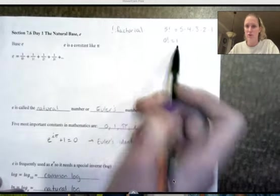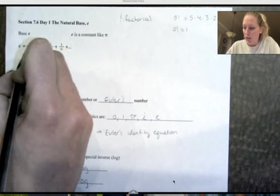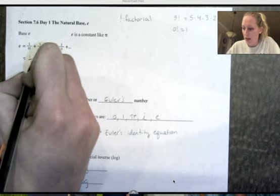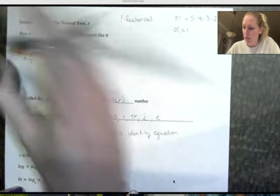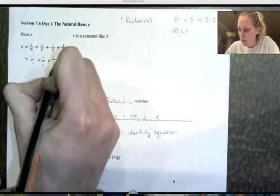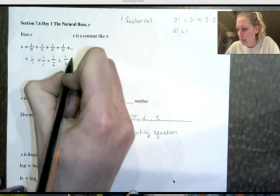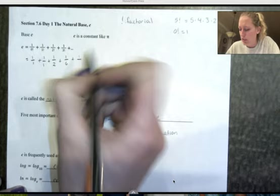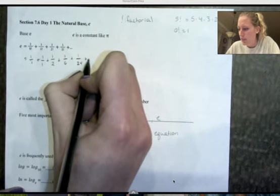So by definition, 0 factorial is 1. So if I were to do these, e equals 1 over 1, 1 factorial is also 1. This should be addition. 2 factorial is 2 times 1. 3 factorial is 3 times 2 times 1, which is 6. 4 factorial is 4 times 3 times 2 times 1, which is 24, and this pattern continues.